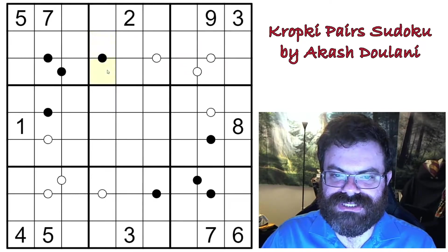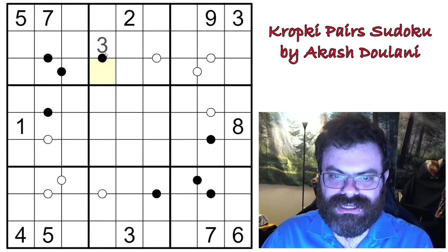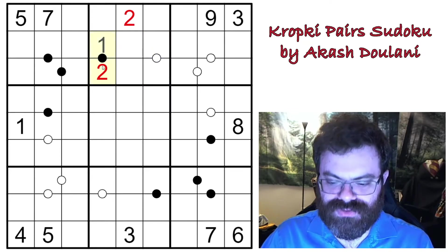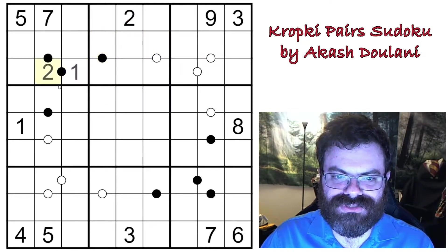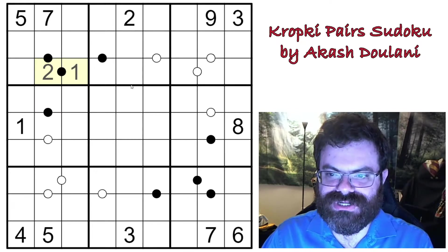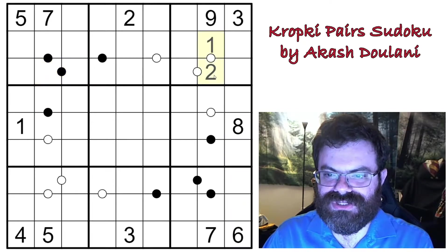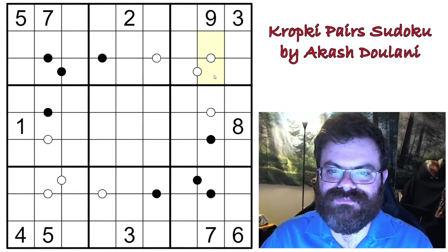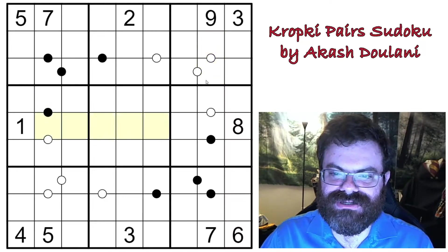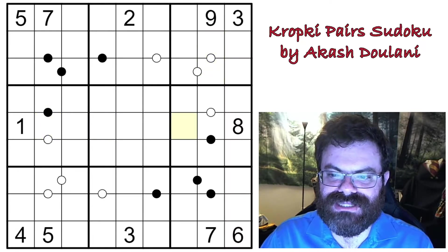So two and four, or three and six, for example, would work for a black dot. You may notice that for black dots and white dots, one and two are both possible. In a black dot you can do one and two; in a white dot you can also do one and two. So the constructor just decides which dot color to use — we could have one and two separated by black dots in one place and white dots in another, and that's no issue.